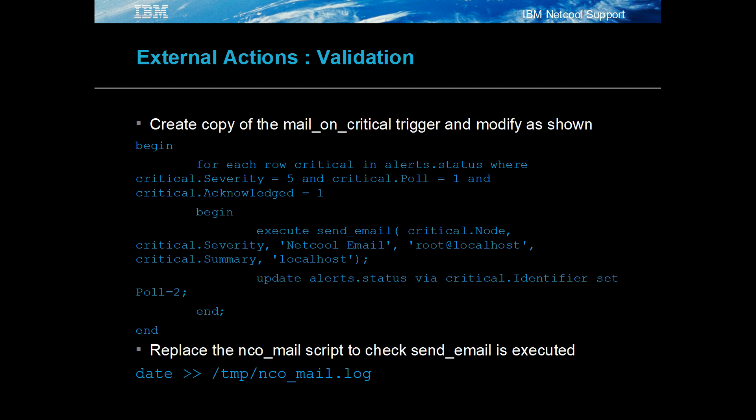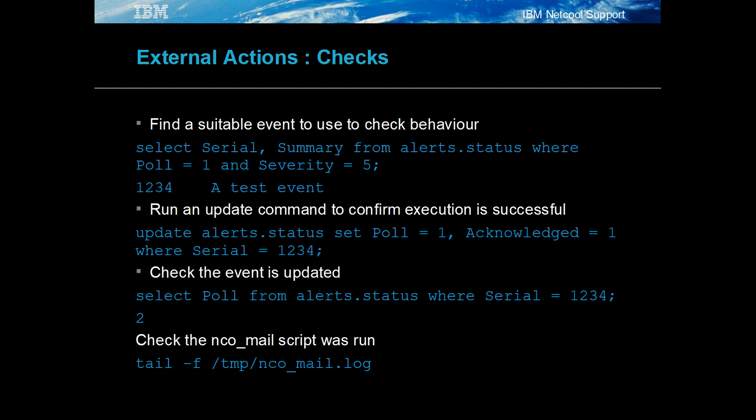Replace the nco_mail script with a simple echo of the date to a file. Find or create a suitable event with all fields set except for acknowledged. Either manually update the event or use the GUI to set acknowledged equal to 1. Check the value of the poll field for the event after a minute, and check the nco_mail.log file to confirm the script was called.